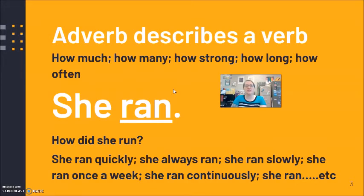So, if we look at our sentence, she ran. How did she run? She ran quickly. She always ran. She ran slowly. She ran once a week. She ran continuously. She never ran. The word that tells how much for running, how strong for running, how long, how often. She beautifully ran. She ran beautifully. She ran sloppily. How did she run? Describing that verb.